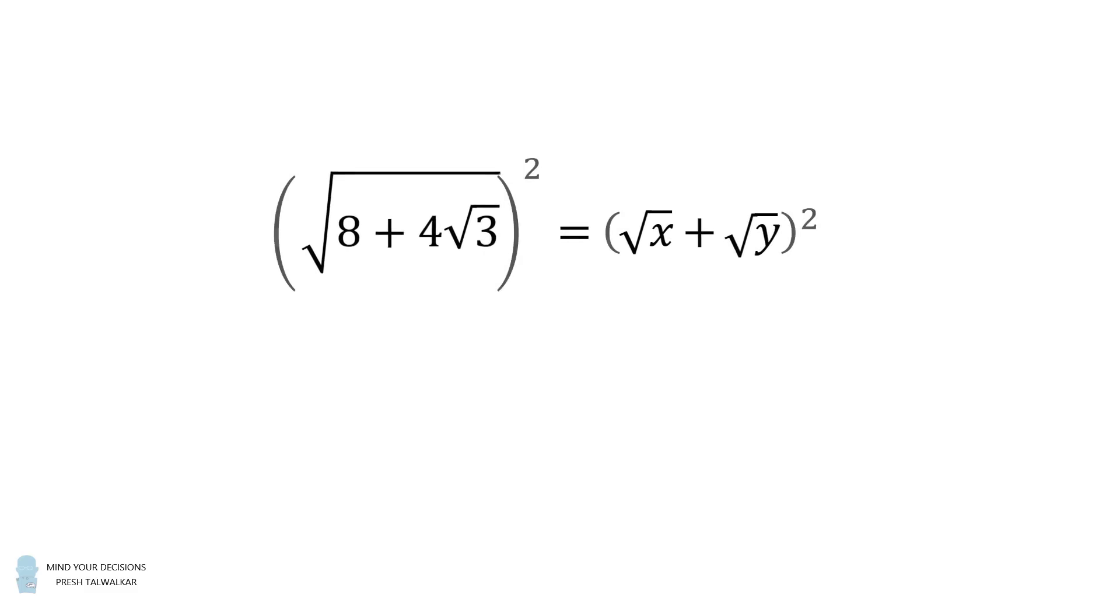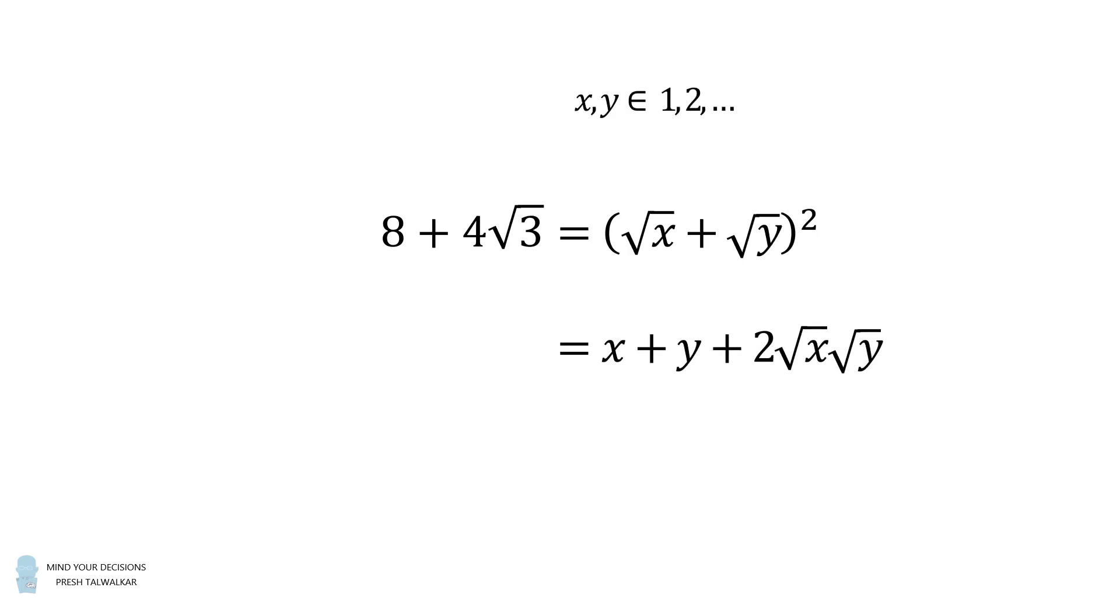To do that, we'll square both sides. We'll get rid of the square root on the left-hand side, so it's equal to 8 plus 4 times the square root of 3. We then will expand the right side. Now since x and y are positive whole numbers greater than or equal to 1, we can write the square root of x times the square root of y is equal to the square root of x times y.